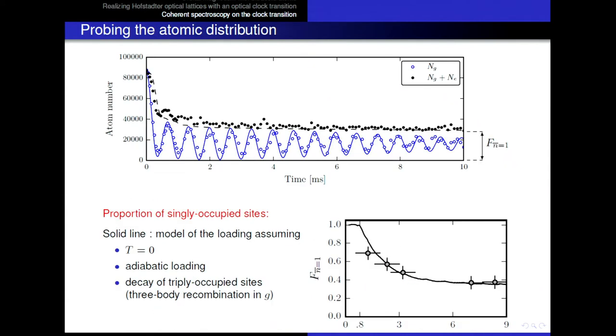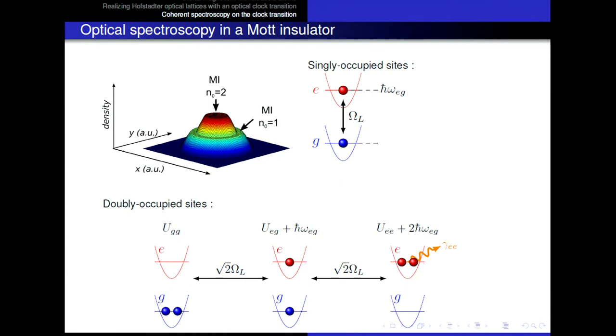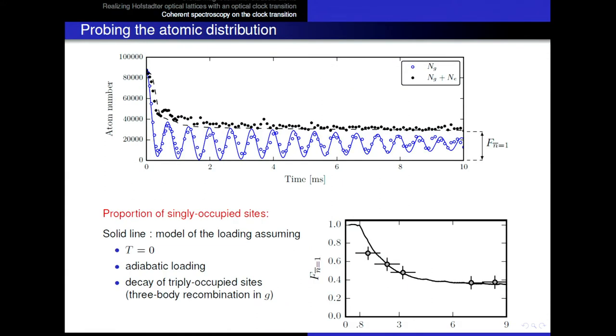So, I'm writing it here as a dissipation rate, gamma E. And in principle, there could also be a gamma EG for this type of situation, but we'll see later that it's negligible. Maybe one more thing to notice is that here, the coupling strength, omega L, is augmented by a factor of square root 2, as opposed to the single atom case. And this is just a consequence of the fact that, since you have two atoms, and they are bosons, you expect bosonic stimulation and an enhanced rate of coupling on this clock transition. So now, coming back to this curve, the way to interpret this very fast decay here is simply because of this strong inelastic losses. So, doubly occupied sites basically start doing Rabi oscillations, but they also decay via this inelastic mechanism.